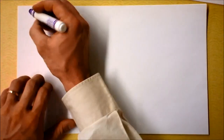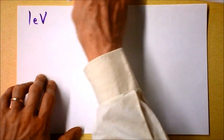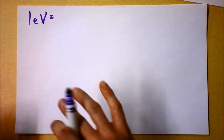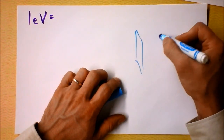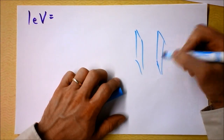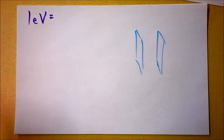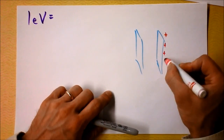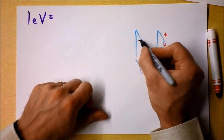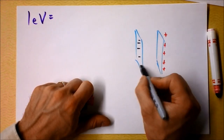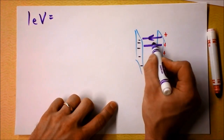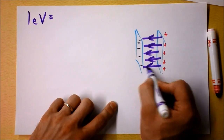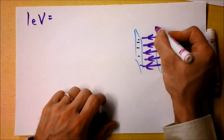Another useful quantity is the electron volt. An electron volt is the energy that an electron has if it's allowed to accelerate through a potential of one volt. To make that concrete, consider a parallel plate capacitor. Make one side positive and one side negative with the same amount of charge, giving an electric field that points to the left.